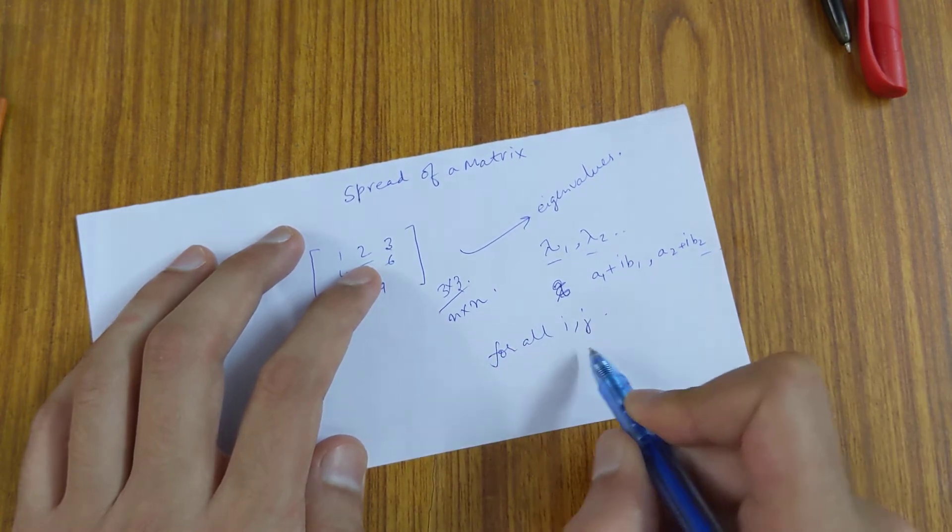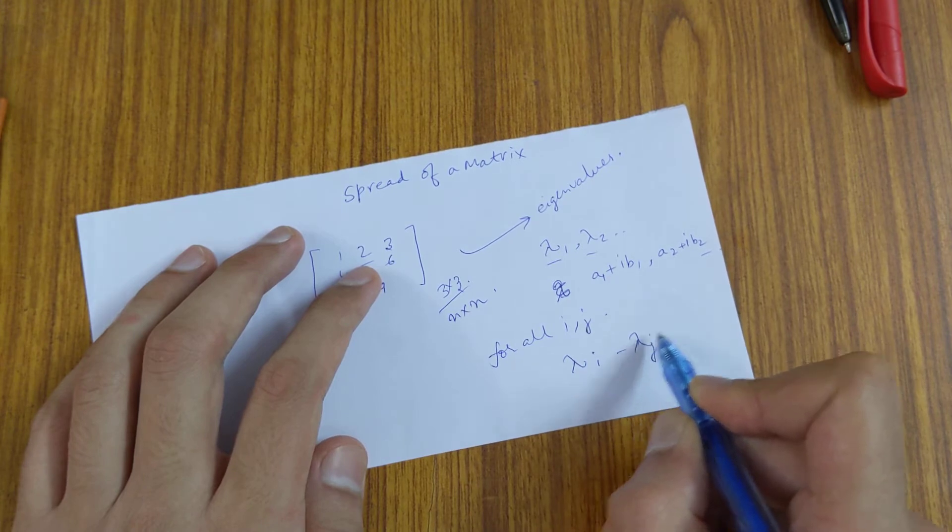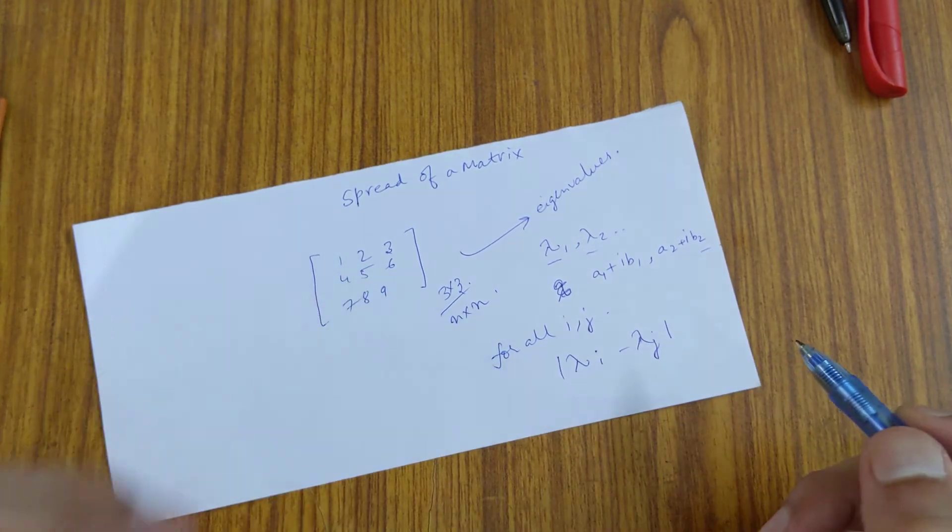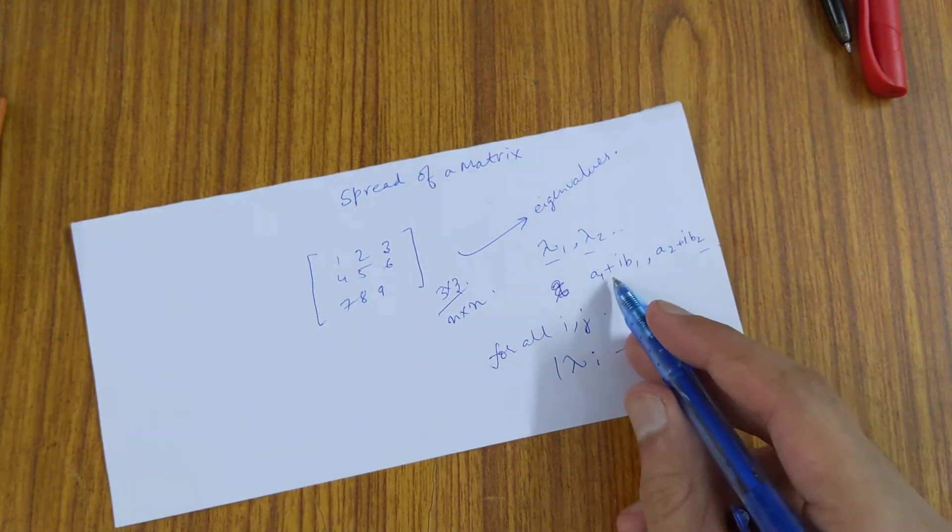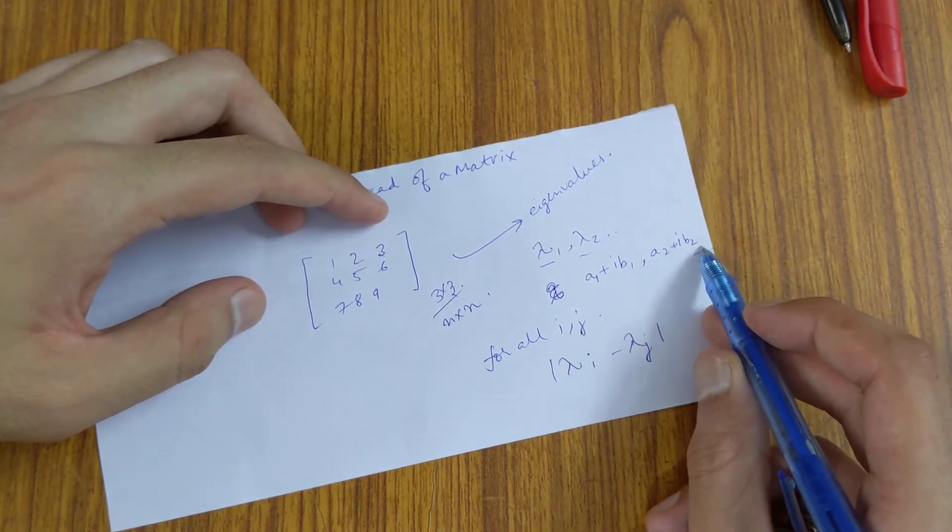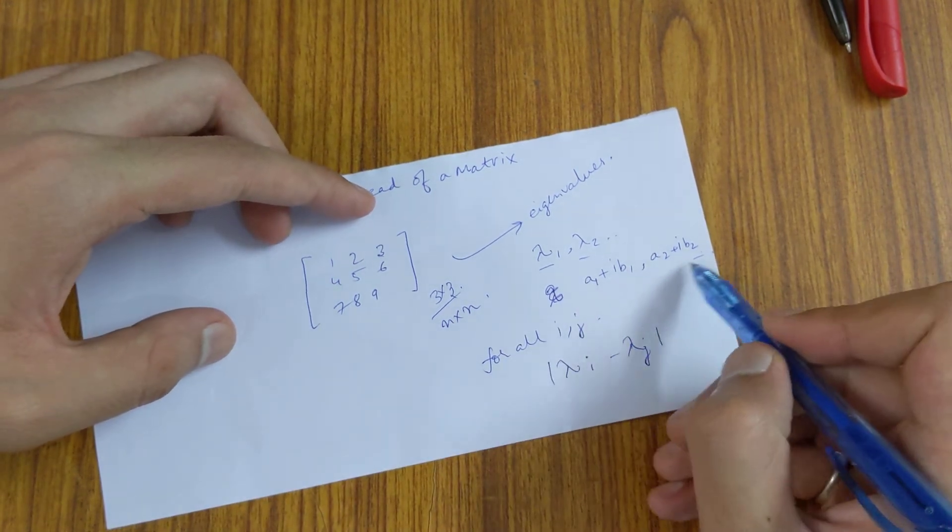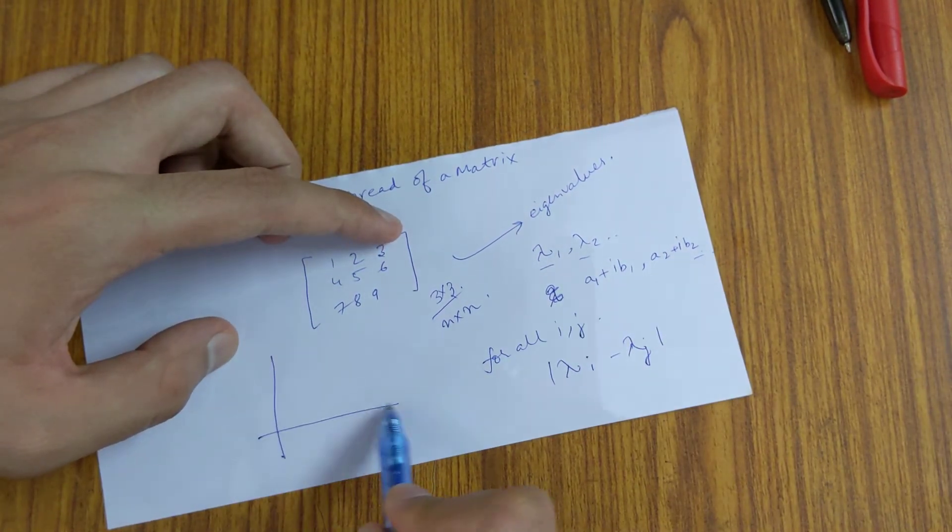We compute lambda i minus lambda j mod. Mod is basically the distance. For example, if you compute a1 plus iota b1 minus a2 plus iota b2, then these both are two points in the complex plane.